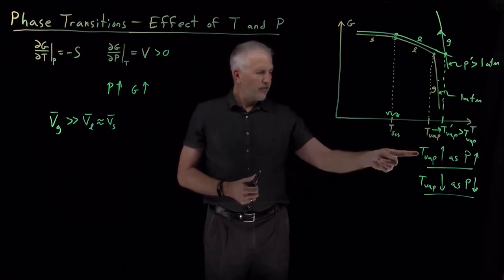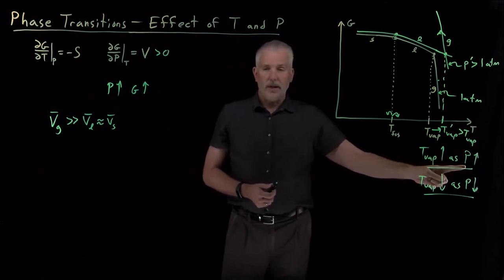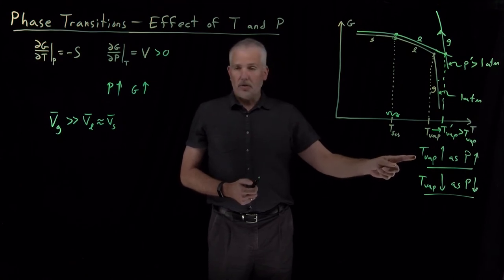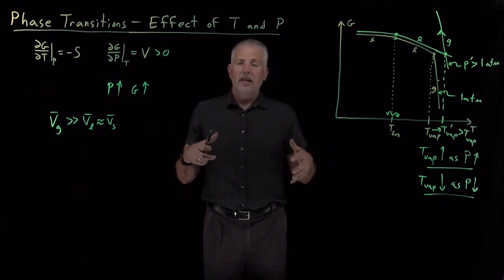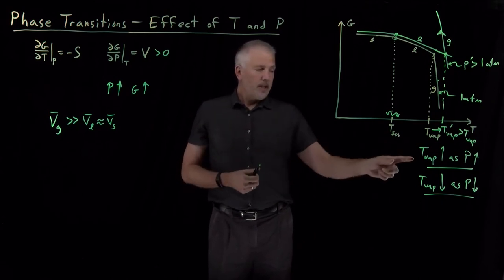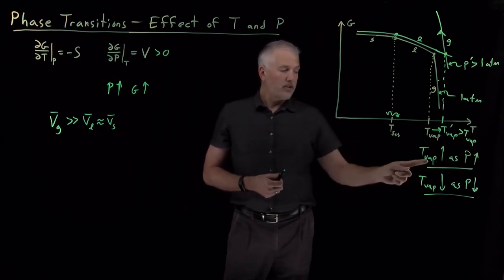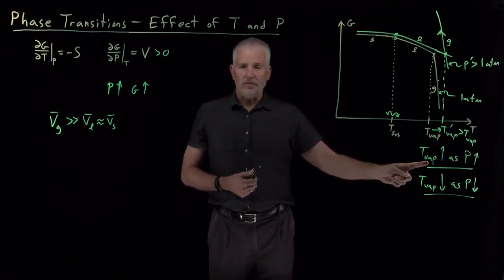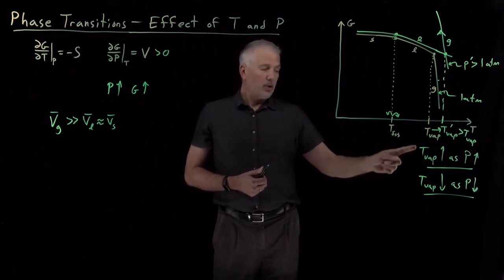Taking this first one first, there's a fairly common situation in which we do increase the pressure above one atmosphere in order to change the boiling point of water. In particular, if you've ever cooked anything in a pressure cooker or an Instant Pot, for example, the whole purpose of a pressure cooker is to seal the lid on tightly, boil the water, create a lot of gas steam in the vapor phase, increasing the pressure above one atmosphere.